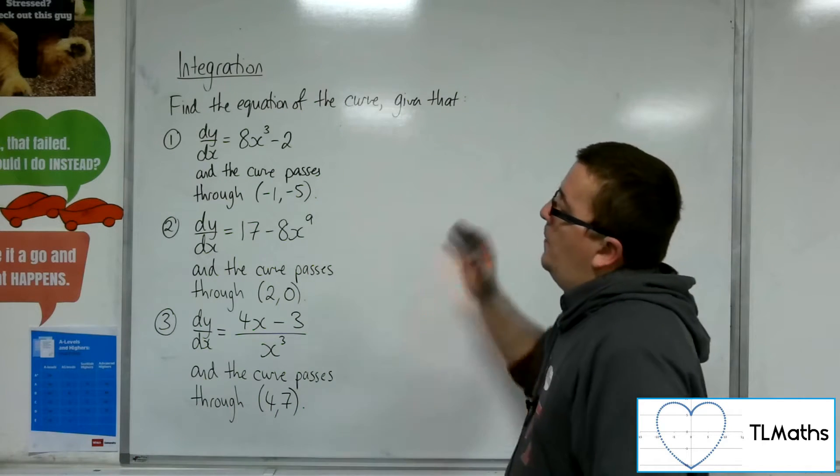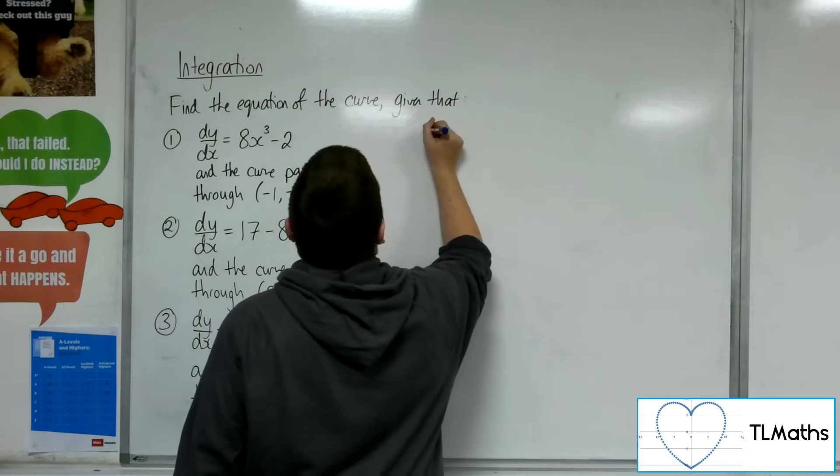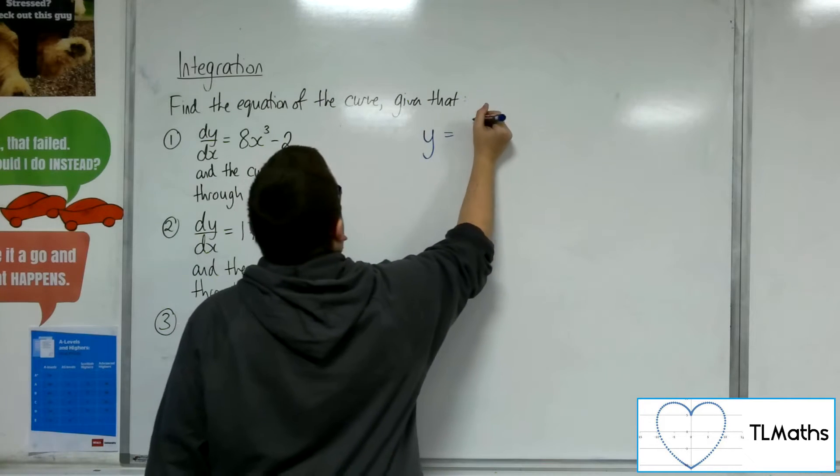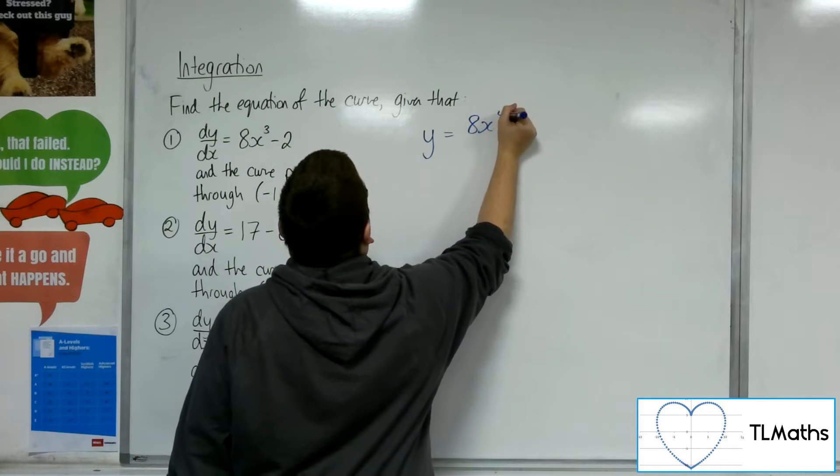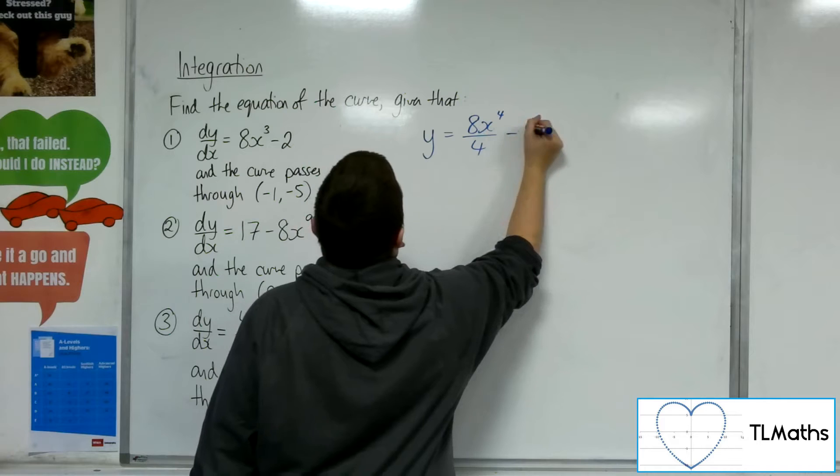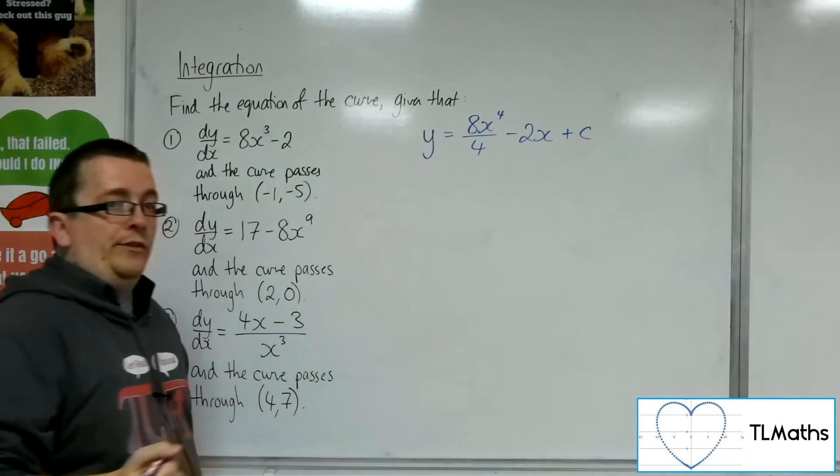So let's have a look at number one. We're given that dy/dx is equal to 8x³ - 2. So we're going to integrate to find the equation of the curve. So we're going to add 1 to the power, divide by the new power. The -2 becomes -2x, and I have that constant of integration c.